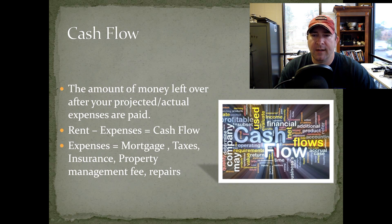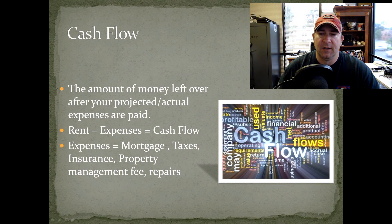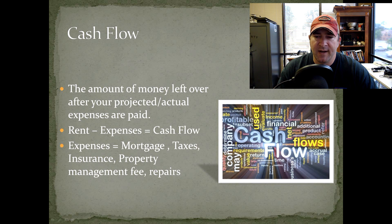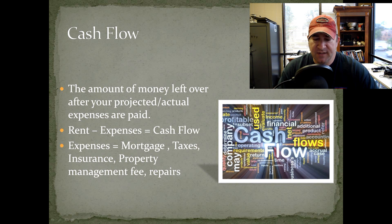A lot of people, when they look at purchasing rental property, one of the things they always look at is: what's the cash flow? I define it as the amount of money left over after your projected or actual expenses are paid. If you're buying a property that's already rented out, you know what it's rented for, what the mortgage is going to be, property management, things like that. My formula is: rent minus your expenses equals your cash flow. Expenses include your mortgage, taxes, insurance, property management fees, repairs, and things like that.